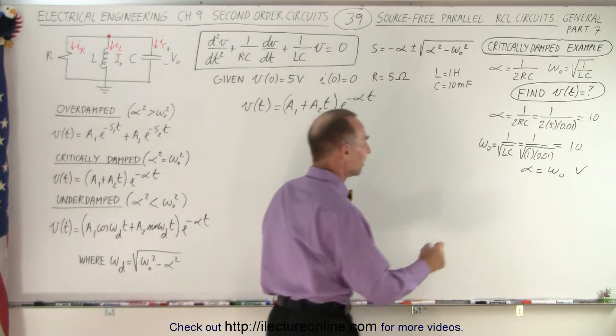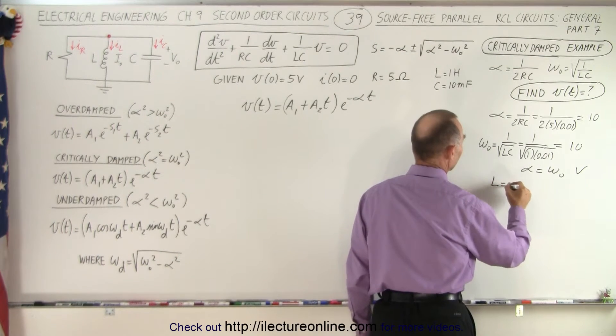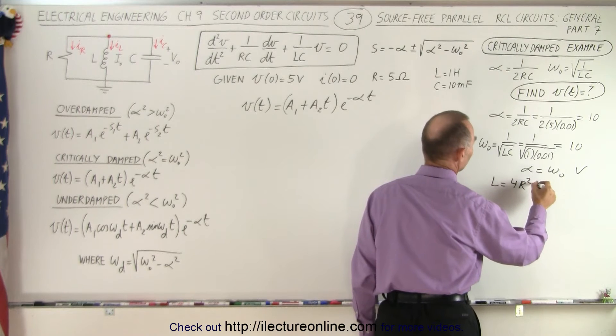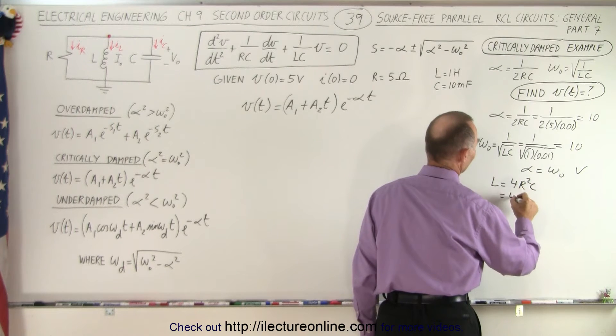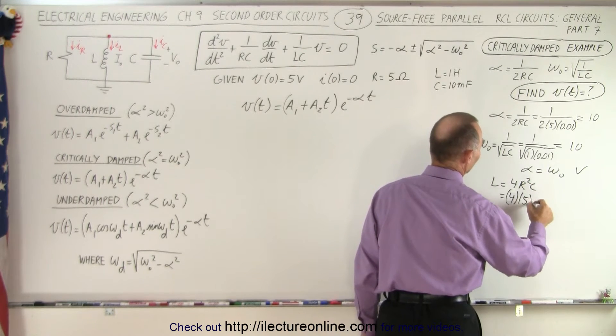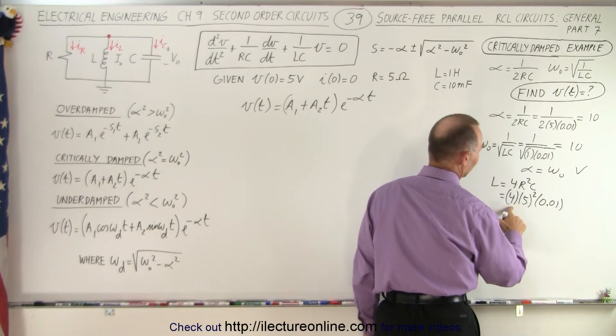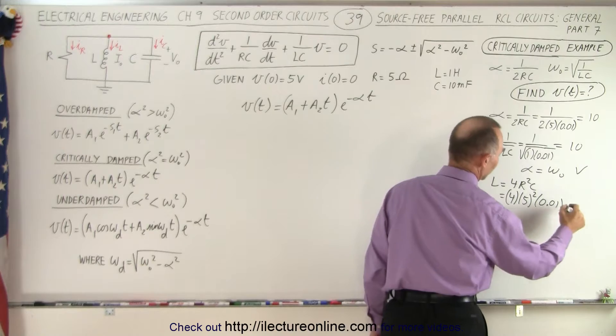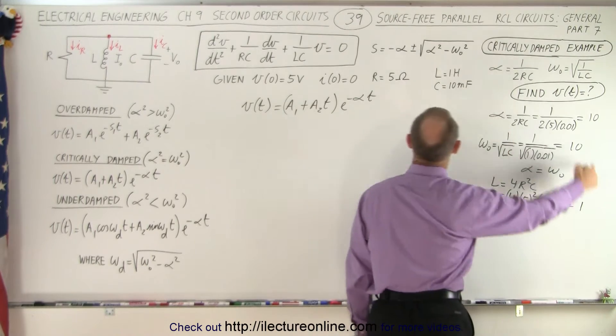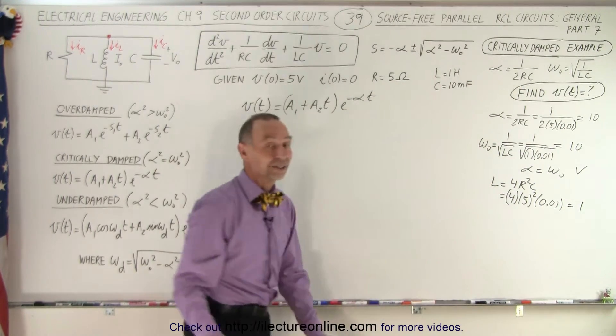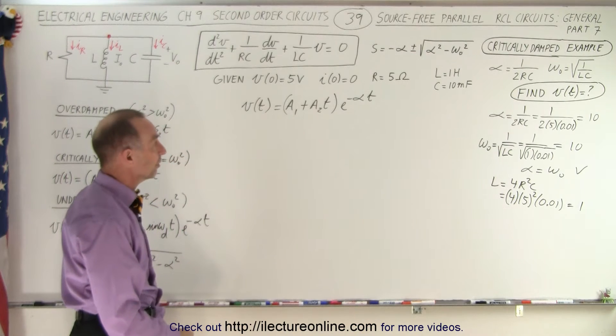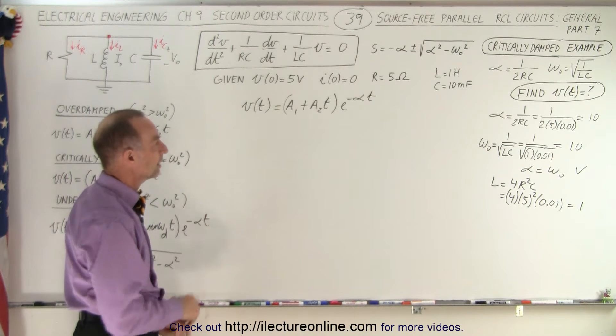We could also have found that by saying that L is equal to 4 times R squared times C so in this case that's 4 times 5 squared times 0.01 and notice that's 25 times 4, which is 100, times 0.01 which is equal to 1, which is equal to the value of the inductor. So both ways show us that yes indeed, we're dealing with a critically damped case.